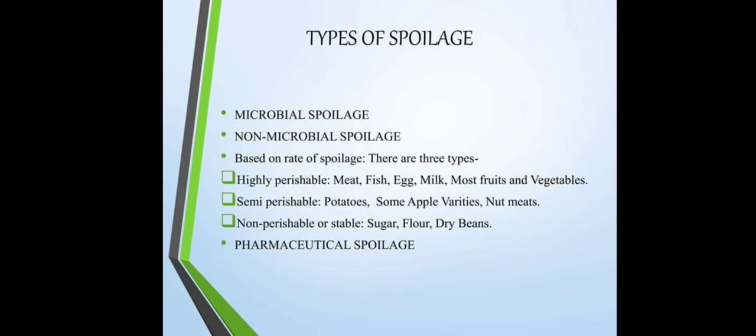Types of spoilage: first is microbial spoilage, and second is non-microbial spoilage. There are three types of non-microbial spoilage based on classification: highly perishable, semi-perishable, or non-perishable.